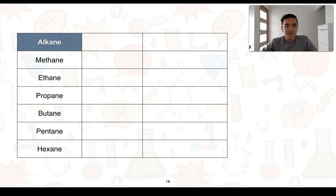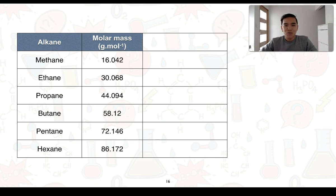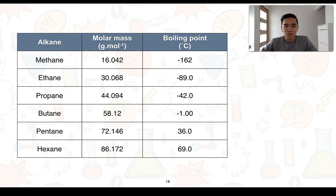To look at explaining differences in physical properties such as boiling points, we're going to consider a range of alkanes to begin with. We have the smallest alkane, which is methane, all the way through to hexane with 6 carbon atoms. We've got their molar masses — the mass of one mole of each compound — and also the boiling points. What we should be able to see is that there is a trend where the boiling points of these hydrocarbons are increasing.